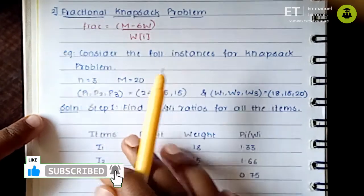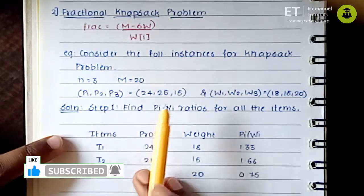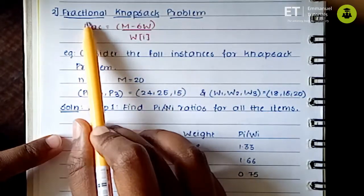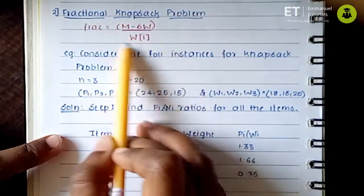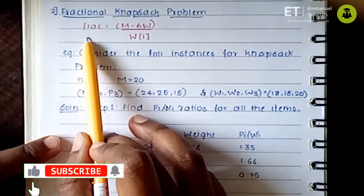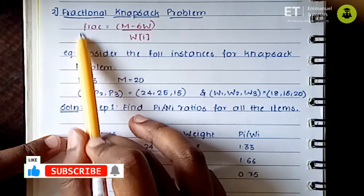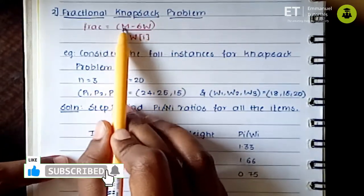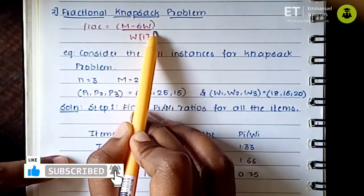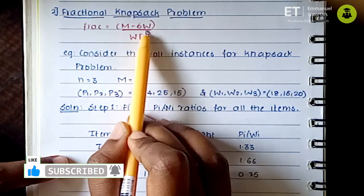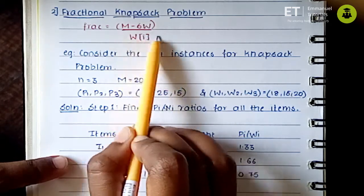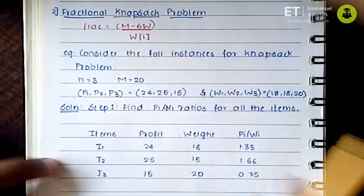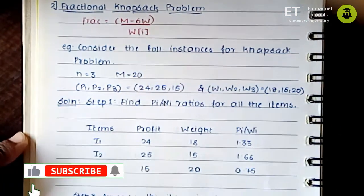To solve the fractional knapsack problem, we must remember this one formula. This is the only thing which makes a difference from the 0/1 knapsack. The formula is M minus SW divided by the weight of the item — we will see what it means later.